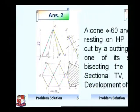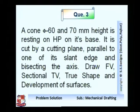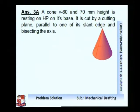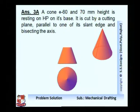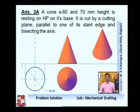Now the next problem is about a cone. A cone with diameter 60 mm and 70 mm height is resting on HP on its base. It is cut by a cutting plane parallel to one of its slant edges and bisecting the axis. Draw front view, sectional top view, true shape, and development of the surface. The cone is given with dimensions — diameter is 60 mm. Draw XY line; diameter of this circle is 60 mm, and height is given as 70 mm. At a distance of 70 mm from the base, mark a point and draw a triangle horizontal.